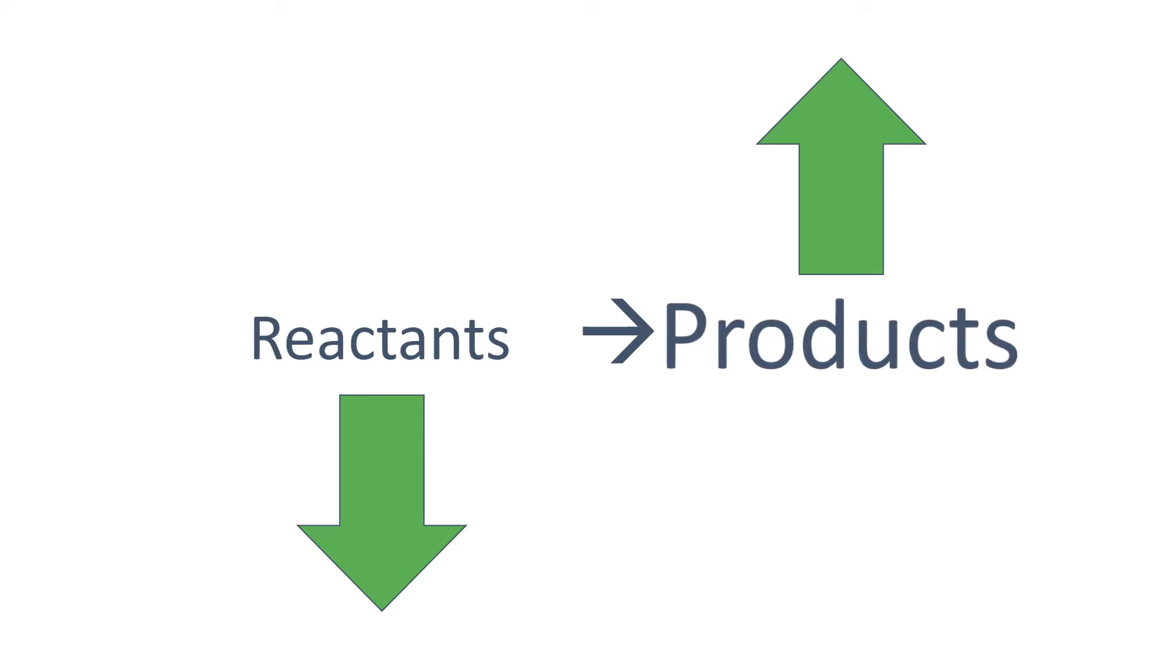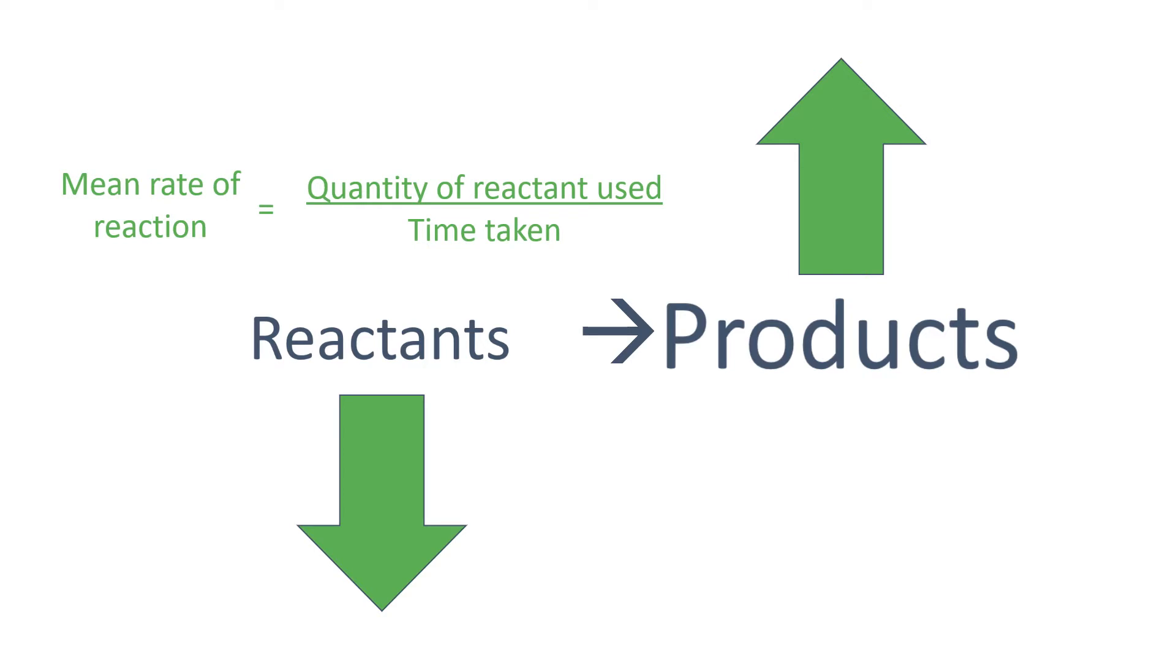The equation to work out the rate is either the quantity of reactant used divided by the time taken, or the quantity of the product formed, again divided by the time taken.